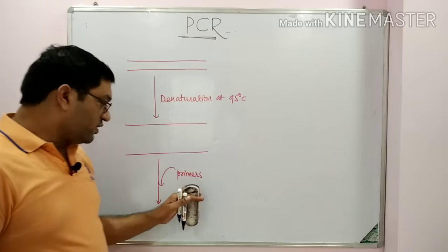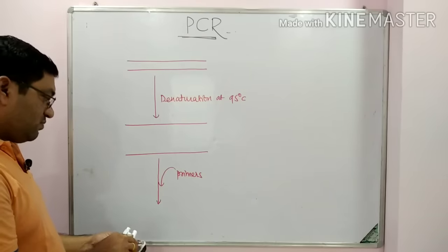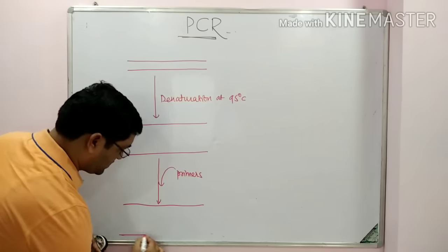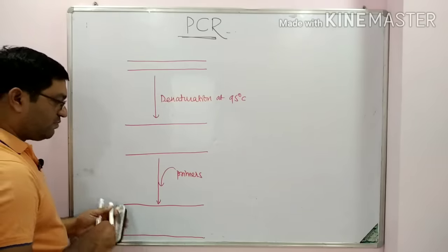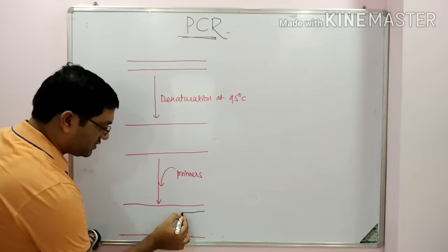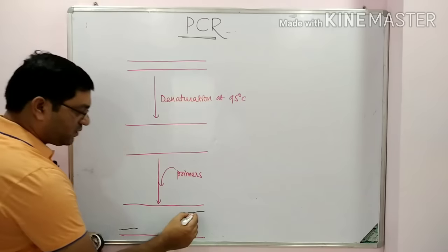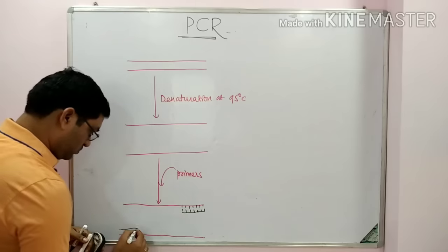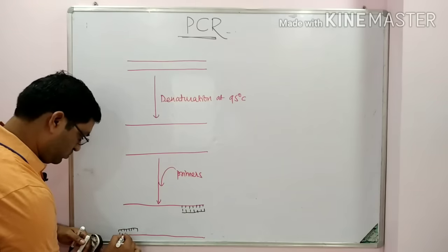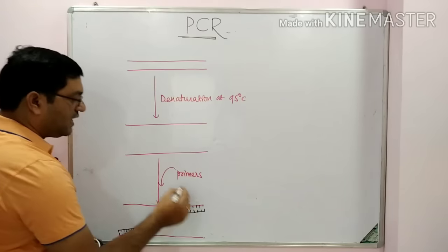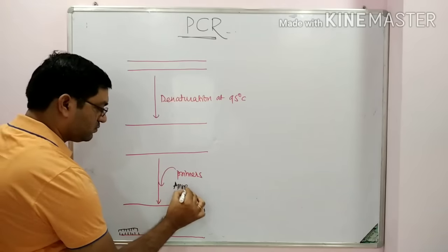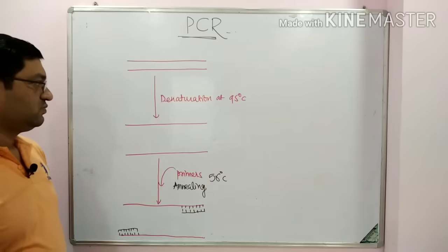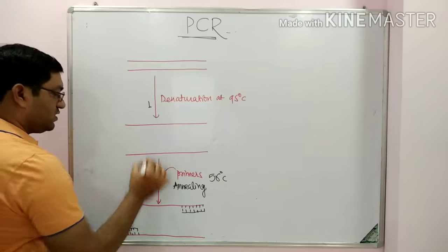Then, during annealing, primers are added. Two types of primers are there: forward primers and reverse primers. These primers are added in the reaction tube. There is one strand and a second strand. This primer will get attached to the end of this separated DNA molecule. These are the nucleotides. This step is known as annealing, occurring at 56 degrees centigrade.